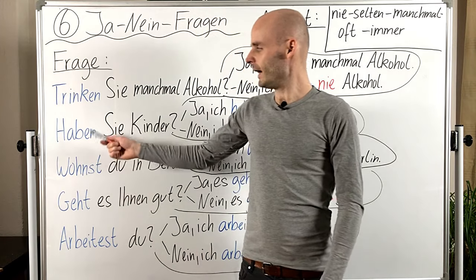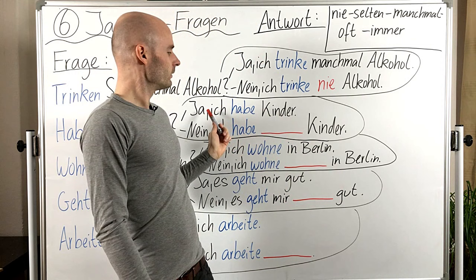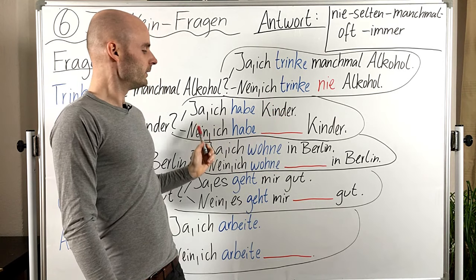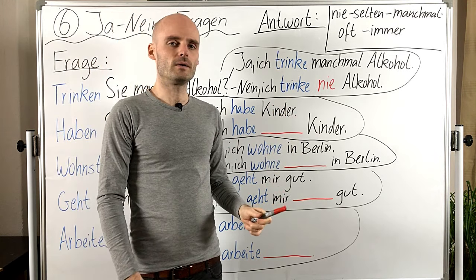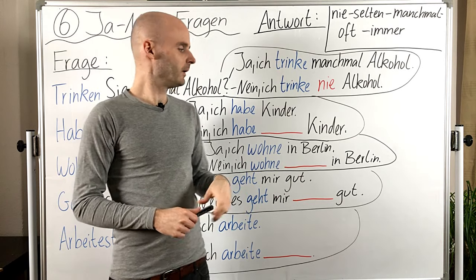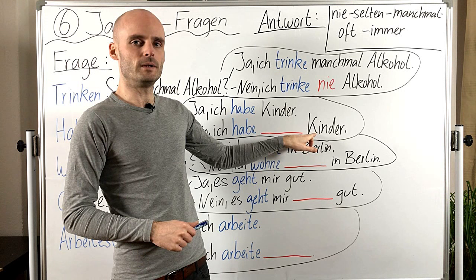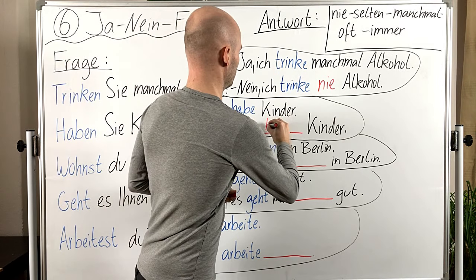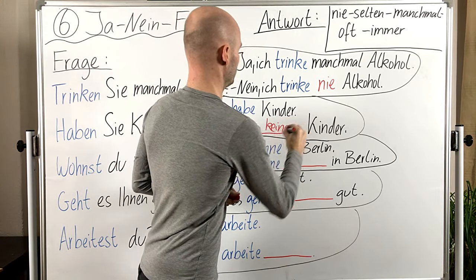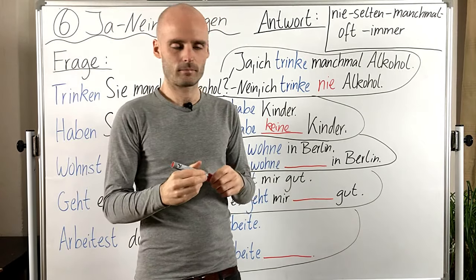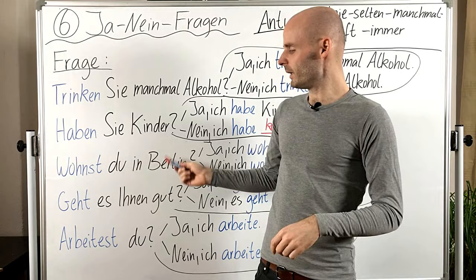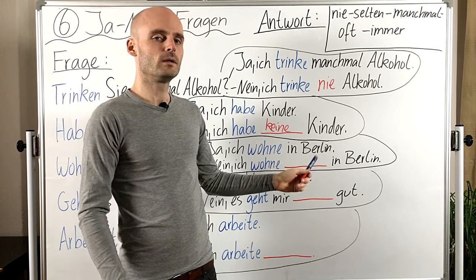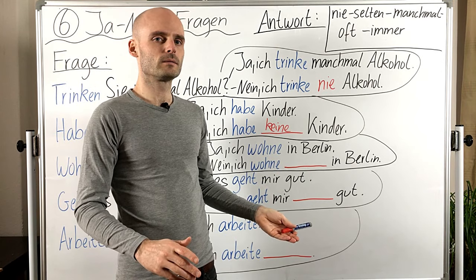Haben Sie Kinder? — children. Antwort: Ja, ich habe Kinder. Oder Nein, ich habe... und jetzt, was brauchen wir? Nicht oder keine? Wir haben hier ein Nomen, a noun, also brauchen wir keine — den Artikel. Nein, ich habe keine Kinder. Dann: Wohnst du in Berlin? Ja, ich wohne in Berlin. Oder Nein, ich wohne... nicht oder keine? Nicht.